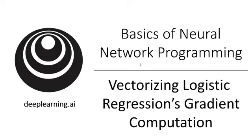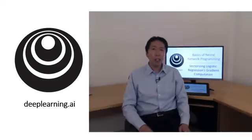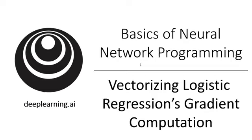In the previous video, you saw how you can use vectorization to compute the predictions, the lowercase a's for an entire training set all at the same time. In this video, you'll see how you can use vectorization to also perform the gradient computations for all m training samples, again, all at the same time. And then at the end of this video, we'll pull it all together and show how you can derive a very efficient implementation of logistic regression.